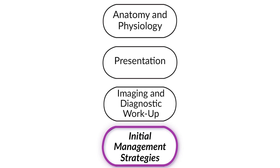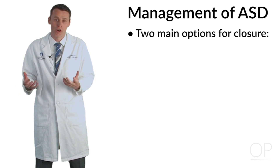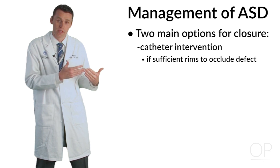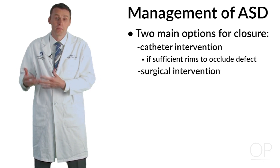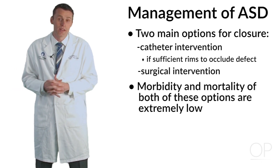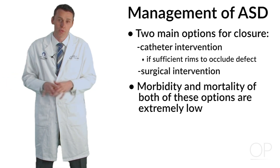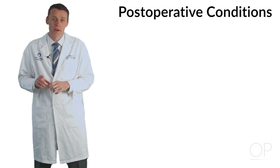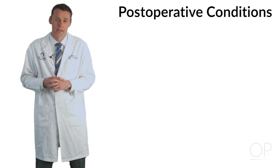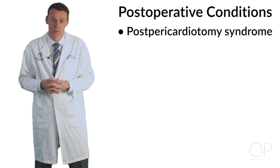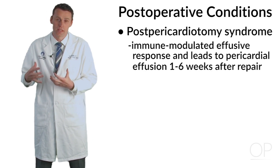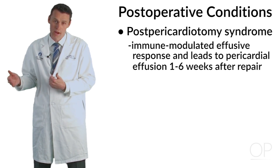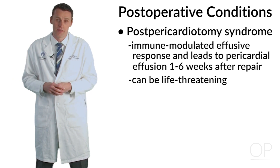Initial Management Strategies. The management of patients with atrial septal defects is very limited because they often present asymptomatically. Management really revolves around deciding how best to repair the lesion. The two main options are either a catheter intervention, if there are sufficient rims to occlude the defect, or a surgical intervention, which is the traditional mainstay repair. The morbidity and mortality of both options are extremely low, with less than one percent mortality reported overall. Patients who've had surgical repair are at risk for post-pericardiotomy syndrome — an immune-modulated effusive response leading to a pericardial effusion one to six weeks after repair.